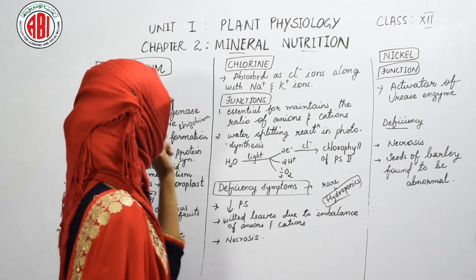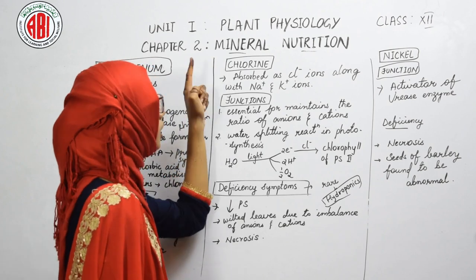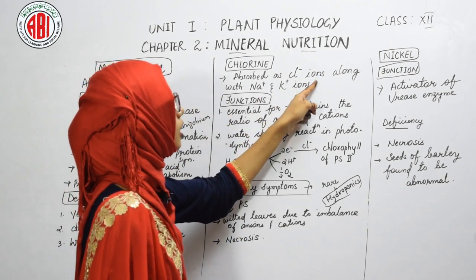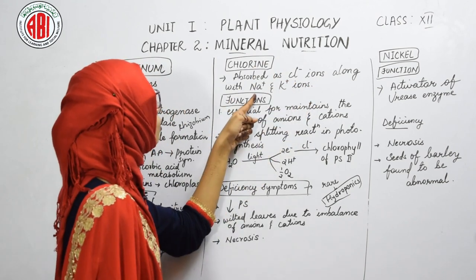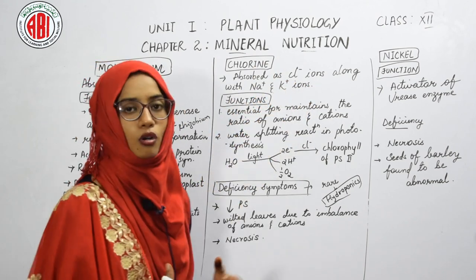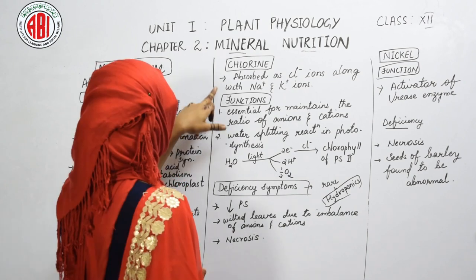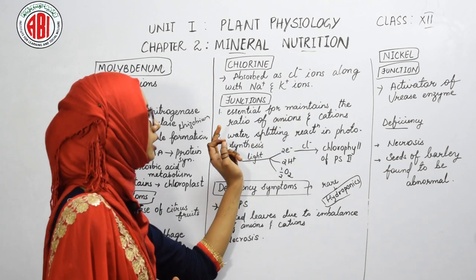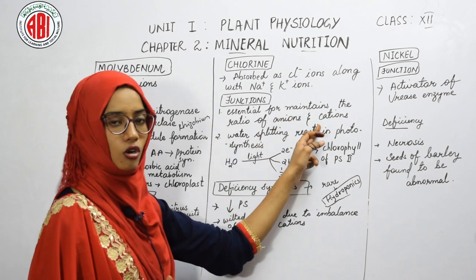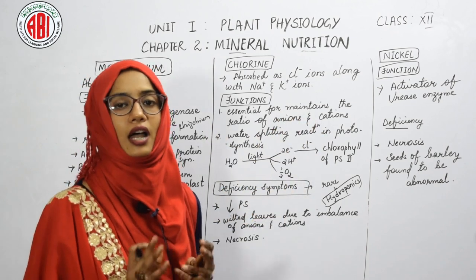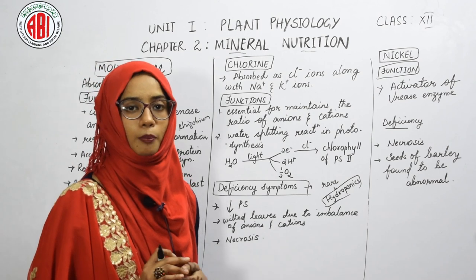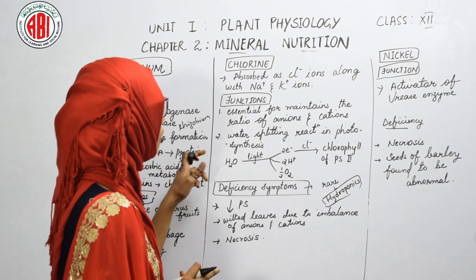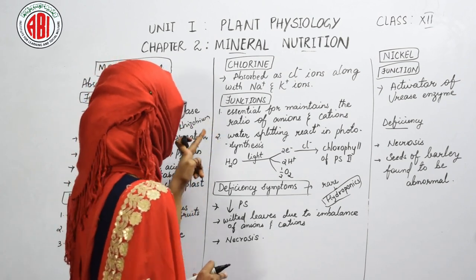The next element is chlorine, absorbed as chloride ions, along with sodium and potassium ions. Chlorine is essential for maintaining the ratio of anions and cations, thereby balancing the osmotic pressure or osmotic potential within the plant body.